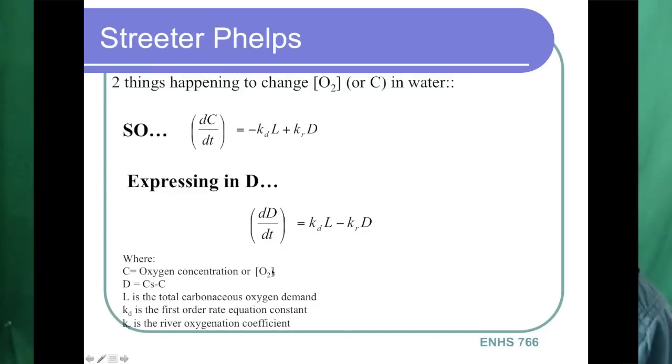So to review, in the Streeter-Phelps equation, two things are happening to change oxygen, or C, we're calling it, in the water. And the one is this rate of decay: the amount of BOD in the water multiplied by this decay constant, and we're making that a negative, so that's moving the concentrations of oxygen down. While this one, the re-aeration coefficient times the actual difference between saturated DO and DO, is going to move that number up.